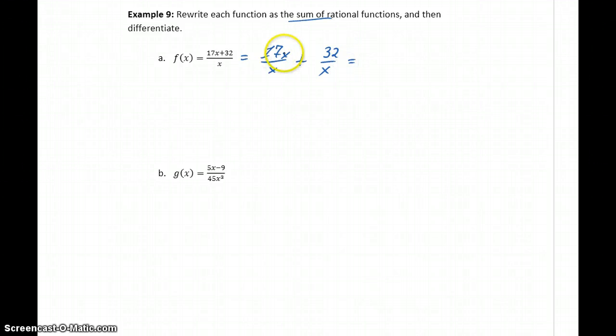So with a little bit of reducing, x over x will cancel, this will be 17. And then we could rewrite this as 32x to the negative first. So f prime of x will be—the derivative of 17 is 0—so we get negative 32x to the negative second, or negative 32 over x squared.